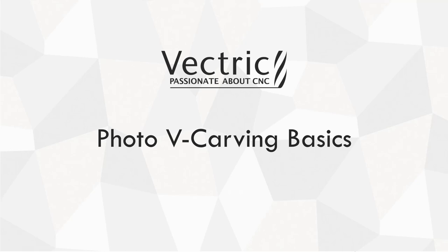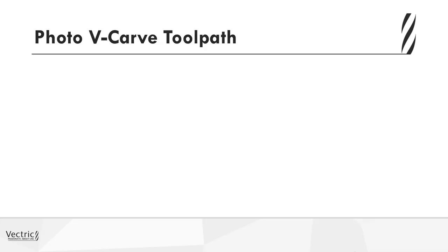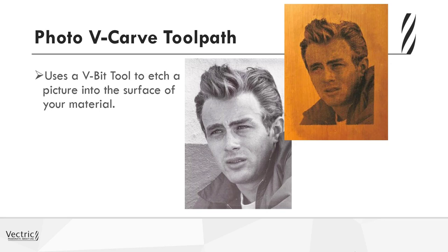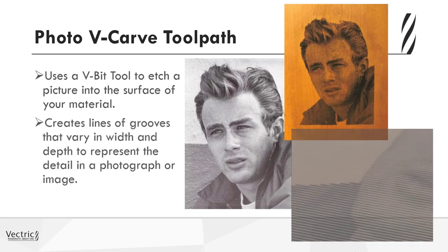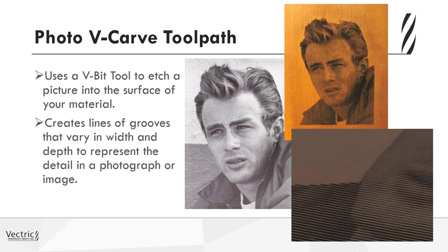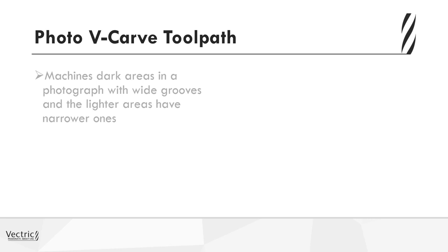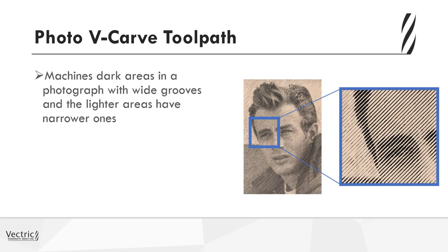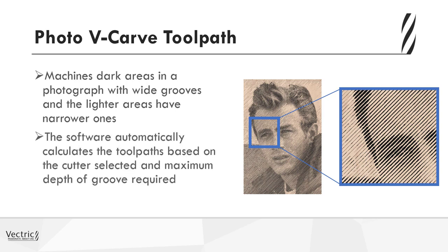The photo v-carve toolpath uses a v-bit tool to etch a picture into the surface of your material. It creates lines of grooves that vary in width and depth to represent the detail in a photograph or image. The quality of the finished result is very dependent upon the high level of contrast between the material surface and the machined grooves. The toolpath machines dark areas with wide grooves and lighter areas with narrower grooves.